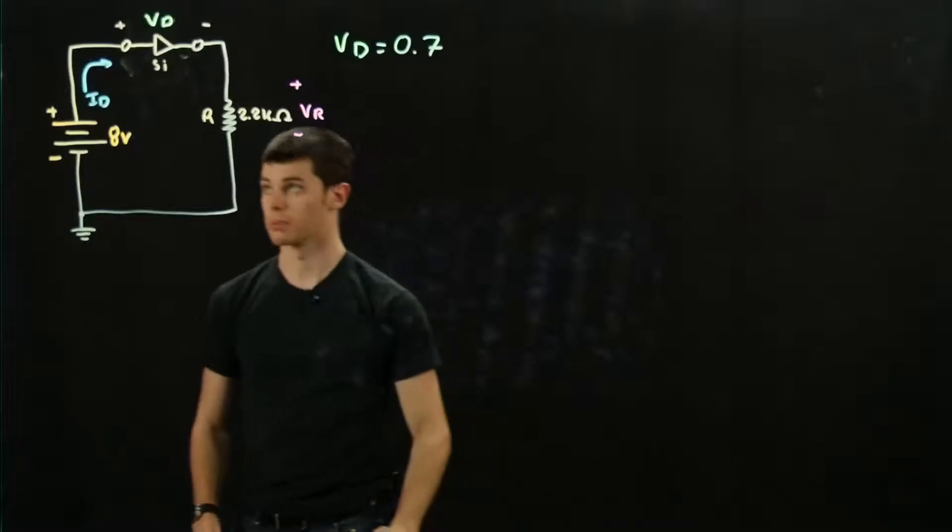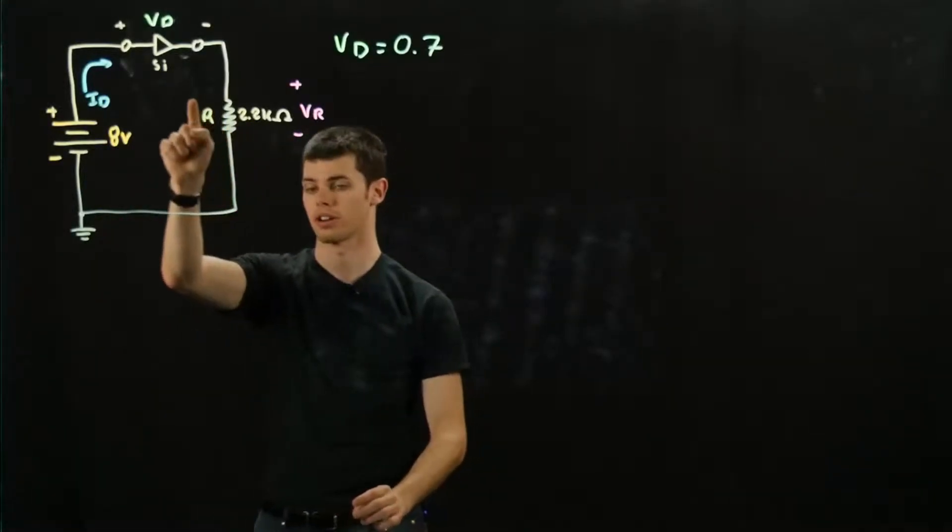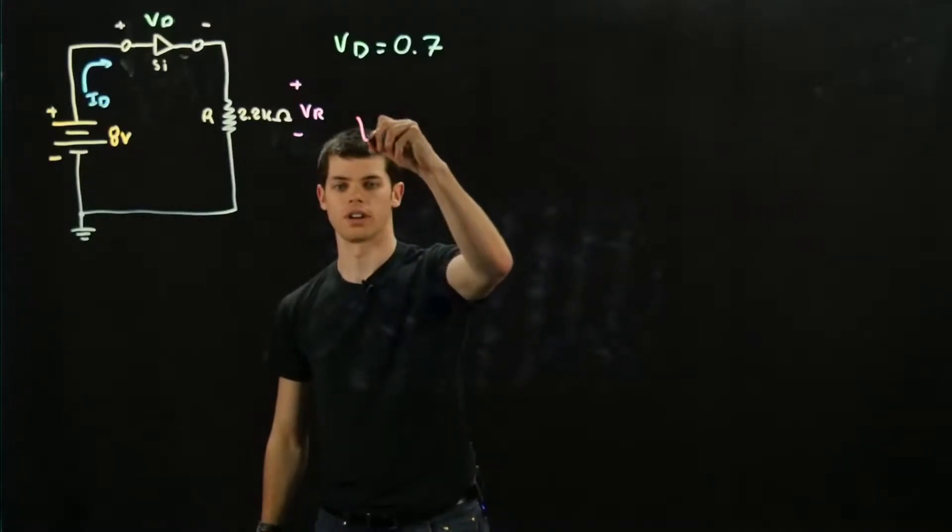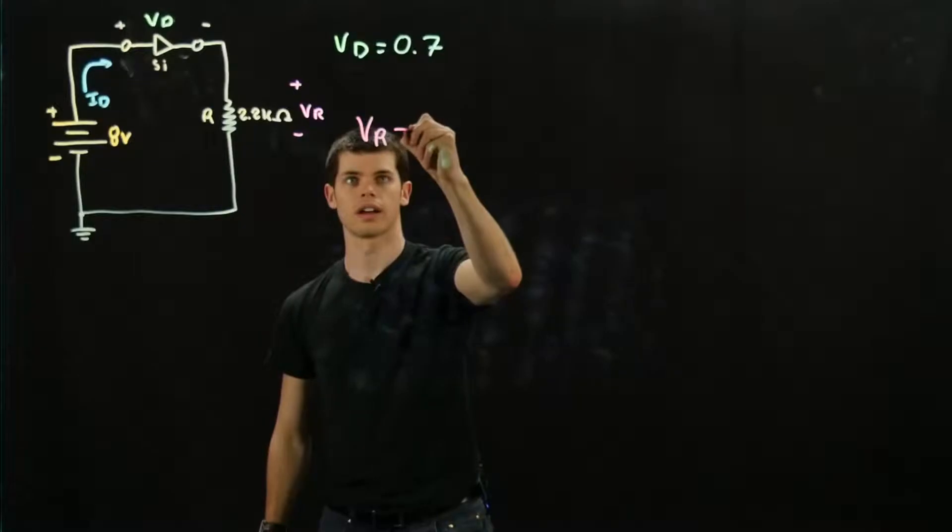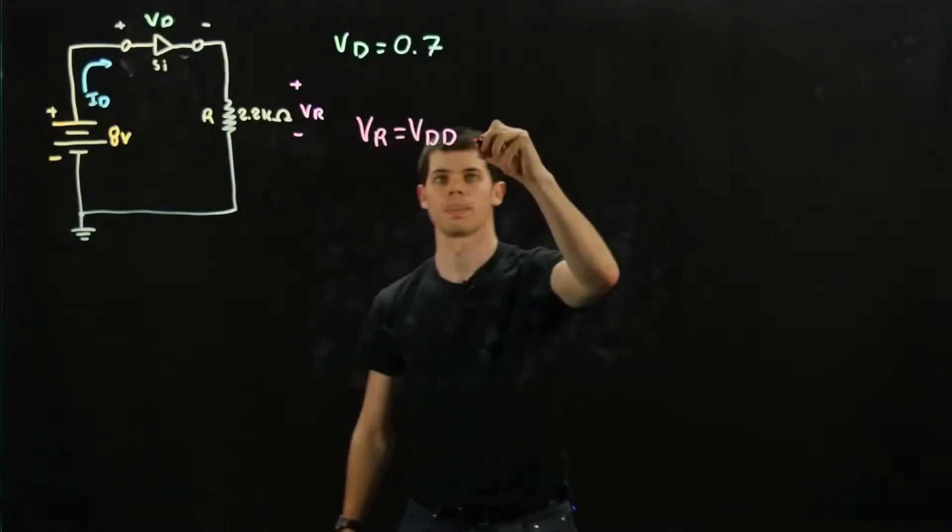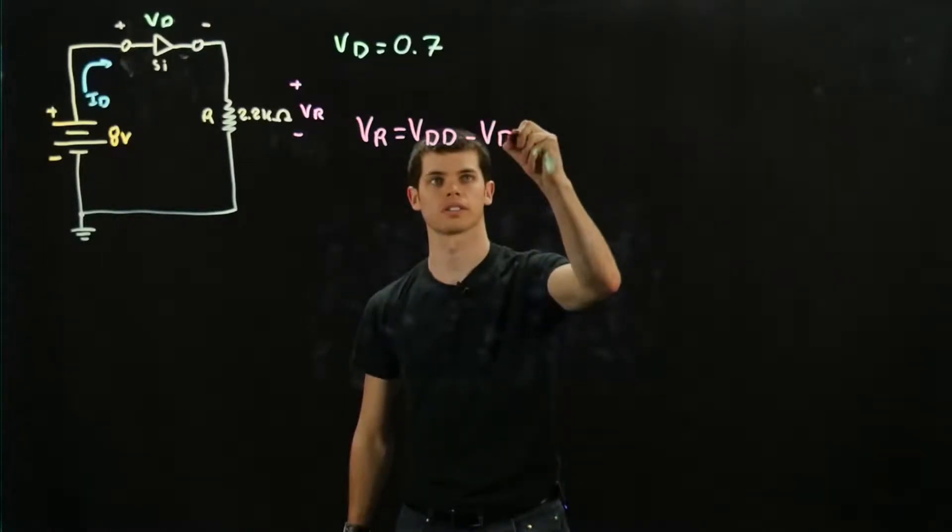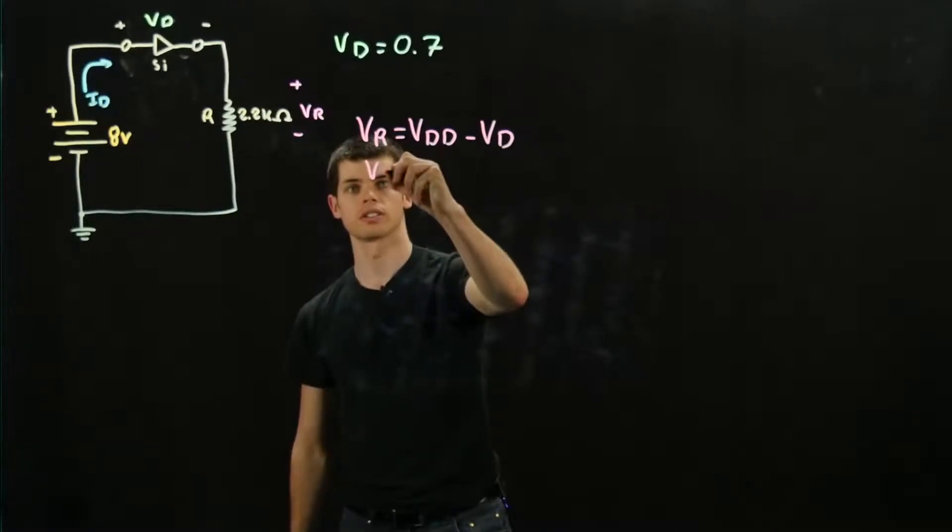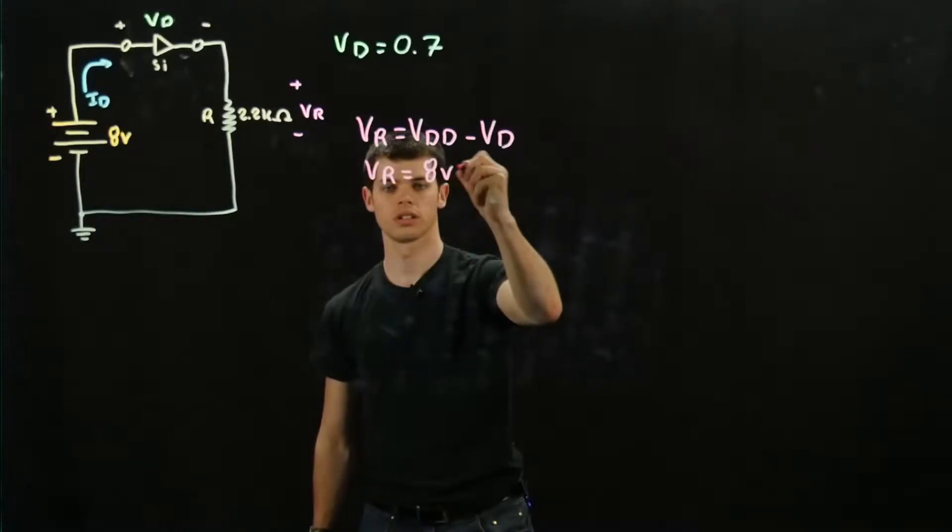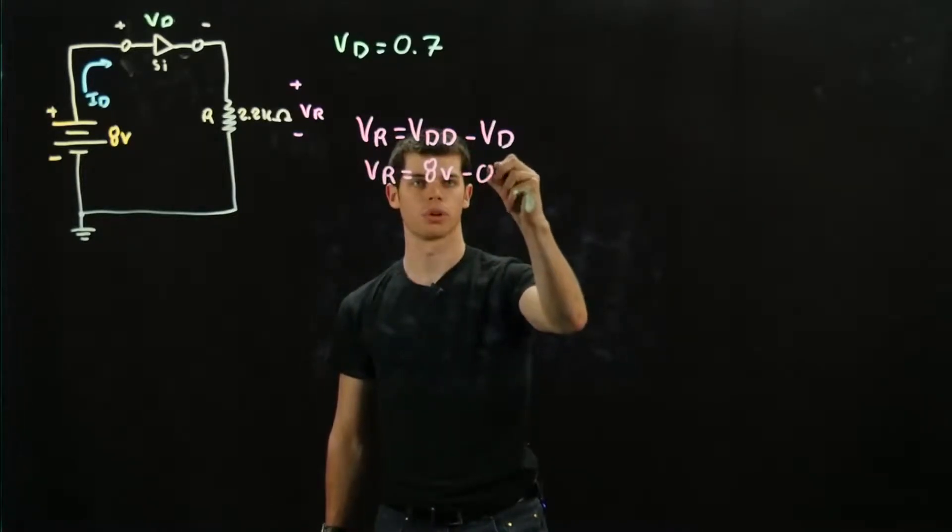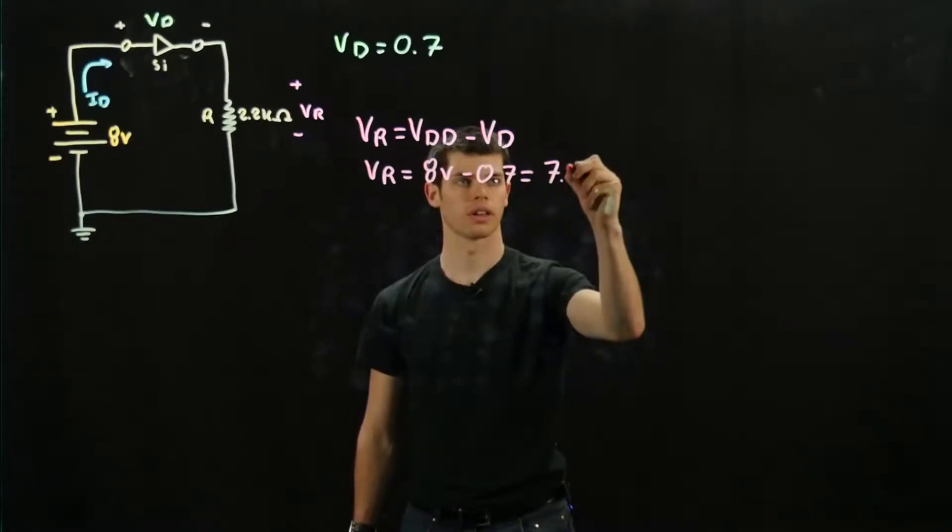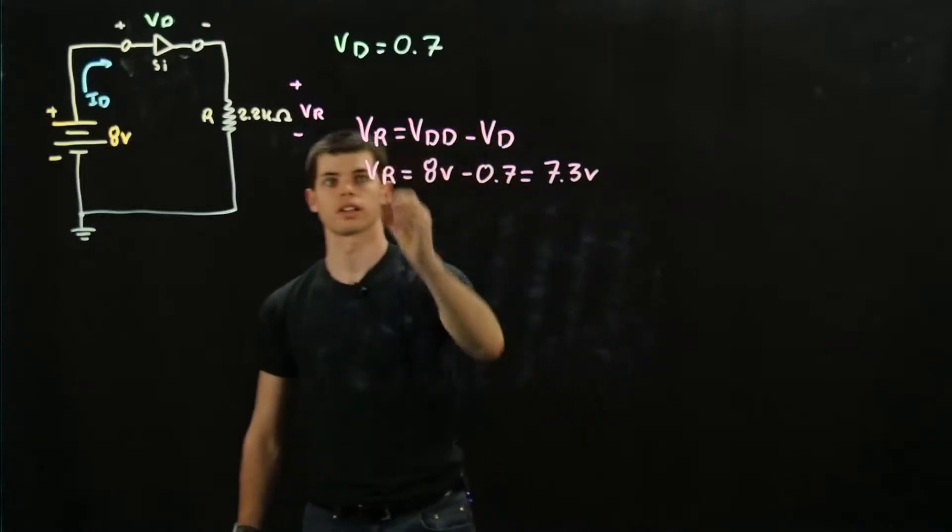All right, so next we're going to be finding VR, which is the voltage drop across the resistor. For that, we're going to find VR as the voltage source, which is VDD, minus VD, which is the voltage drop across the diode. For this case, VR is just going to be equal to 8 volts minus 0.7 volts. That's going to give us a nice round value of 7.3 volts.